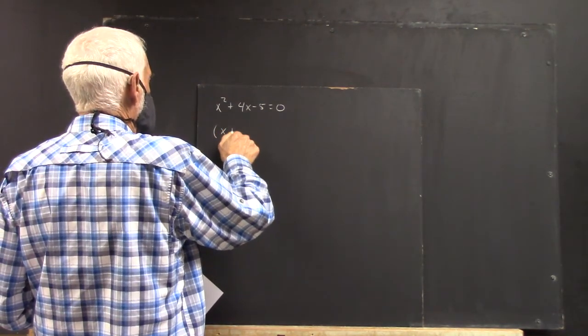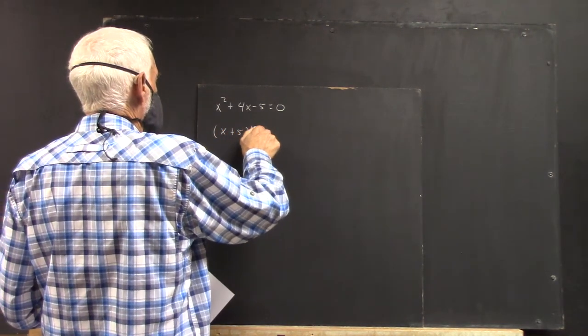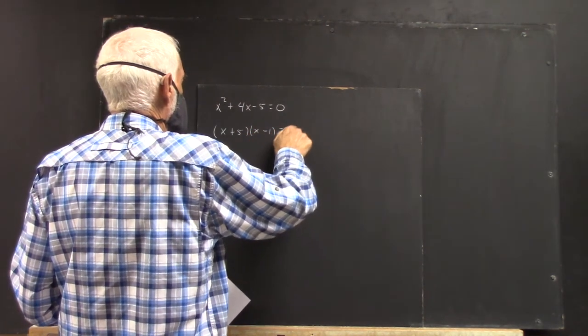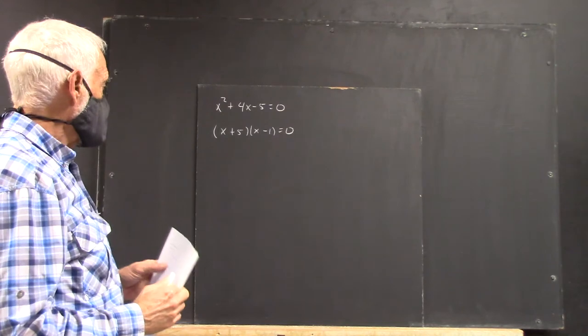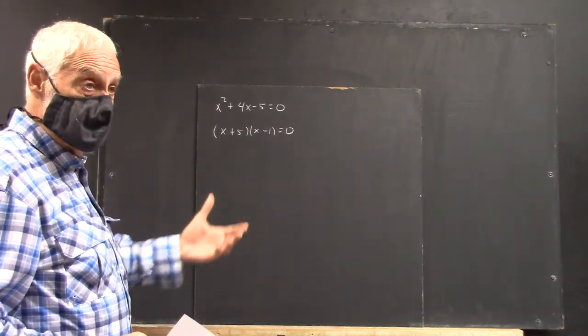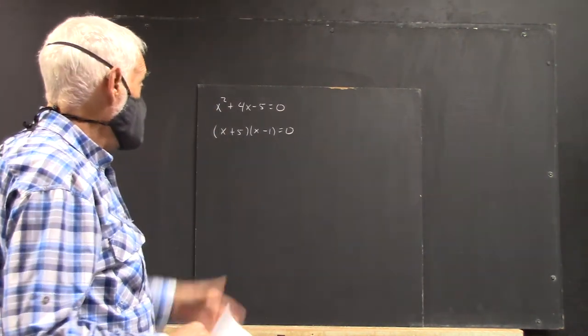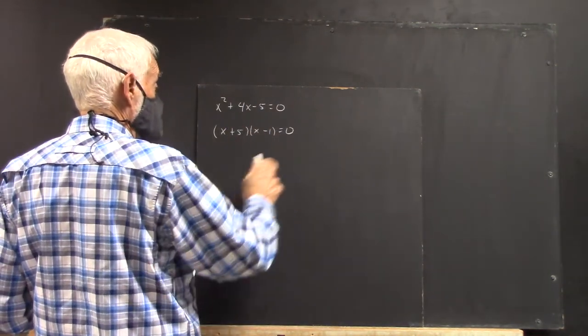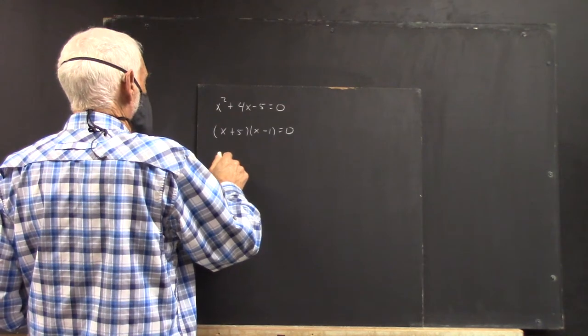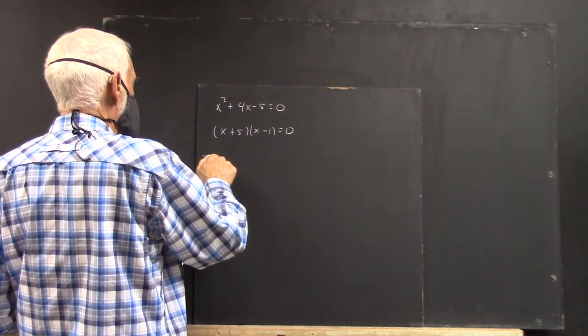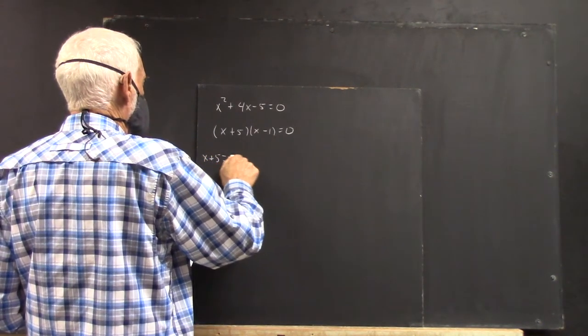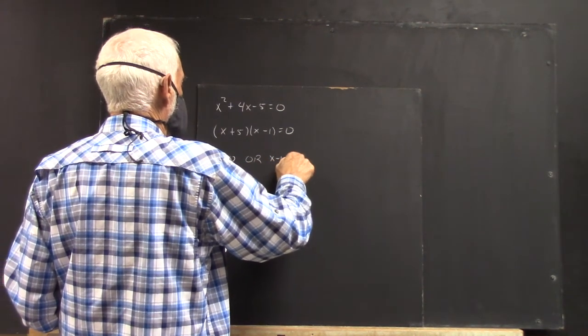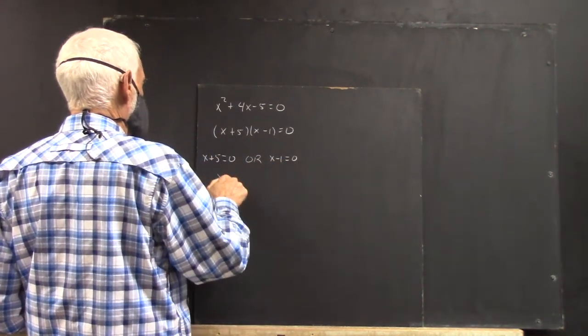Now we've been over the techniques of factoring. You just try all possibilities if it's not obvious to you. And this one might be fairly obvious. And we get the factored form of this expression equal to 0. So, x plus 5 equals 0, or x minus 1 equals 0.